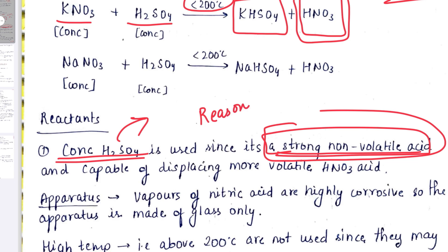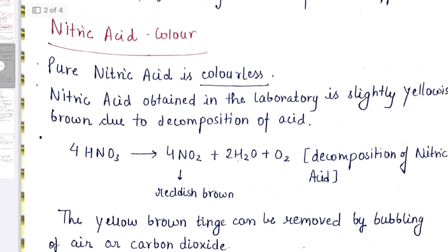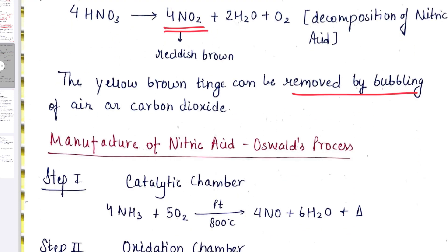On heating, on the decomposition of nitric acid, what is formed? So this is reddish brown fumes. Nitric acid obtained in the laboratory is slightly yellowish brown due to decomposition of acid. They may ask you the reason for the color, why is it slightly yellowish brown, and how can we remove the yellow brown tinge by bubbling of air or CO2.